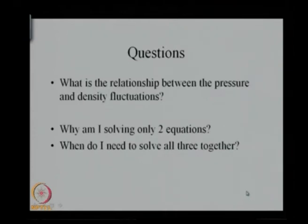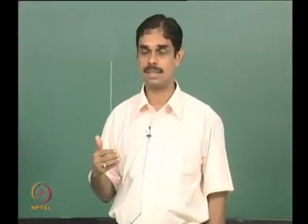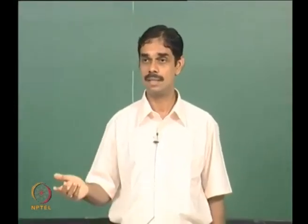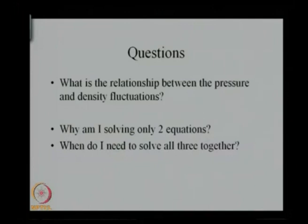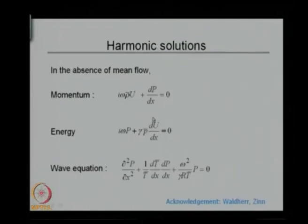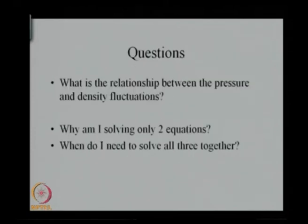I stopped last class with some questions. The first question was: what is the relationship between pressure and density fluctuations? We worked it out and the answer was that p-prime is not exactly rho-prime times c-squared — there is a correction term. The second question was: why am I solving only two equations? I started with momentum and energy. Even in the time-domain solution I was starting with momentum and energy, but we actually have three equations: continuity, momentum, and energy. So why are we solving only two?